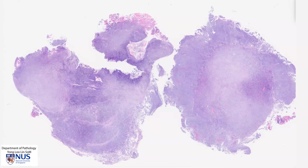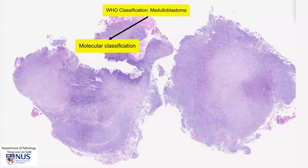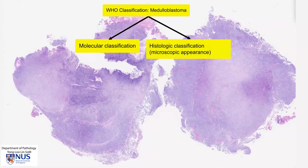In the current WHO classification, medulloblastomas can be typed according to the molecular type — in other words, different molecular aberrations. There are several molecular subtypes, and all of these are grade 4 tumors. In addition, they can also be classified according to the histologic or morphologic type. This particular example is a classic medulloblastoma, which is the commonest histologic type.